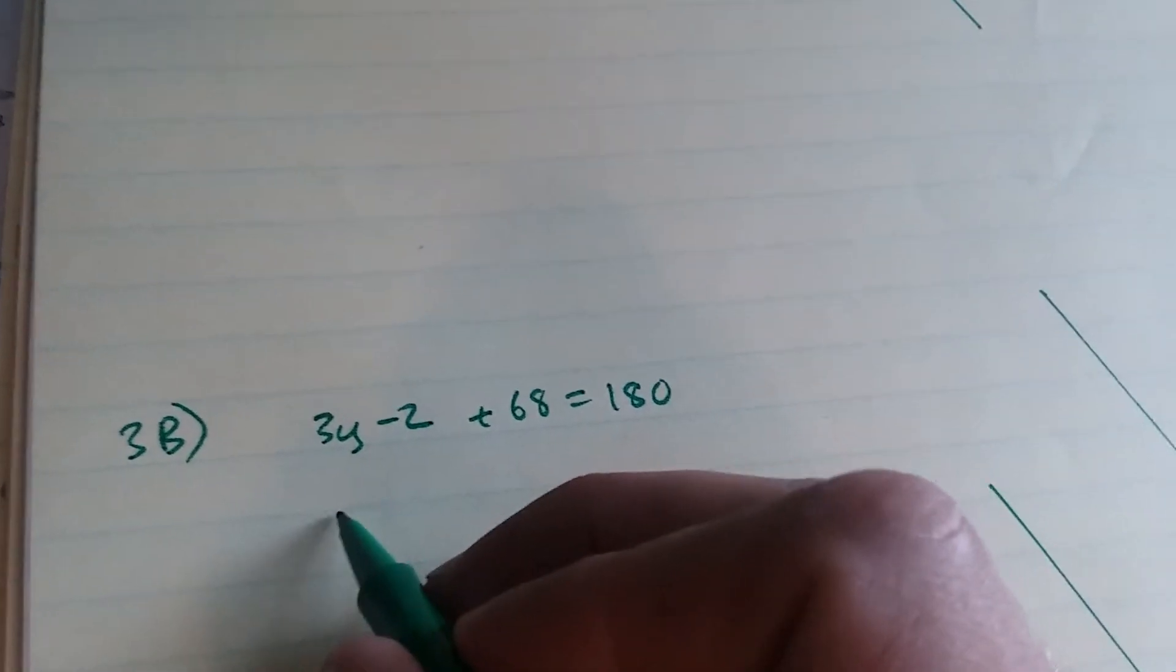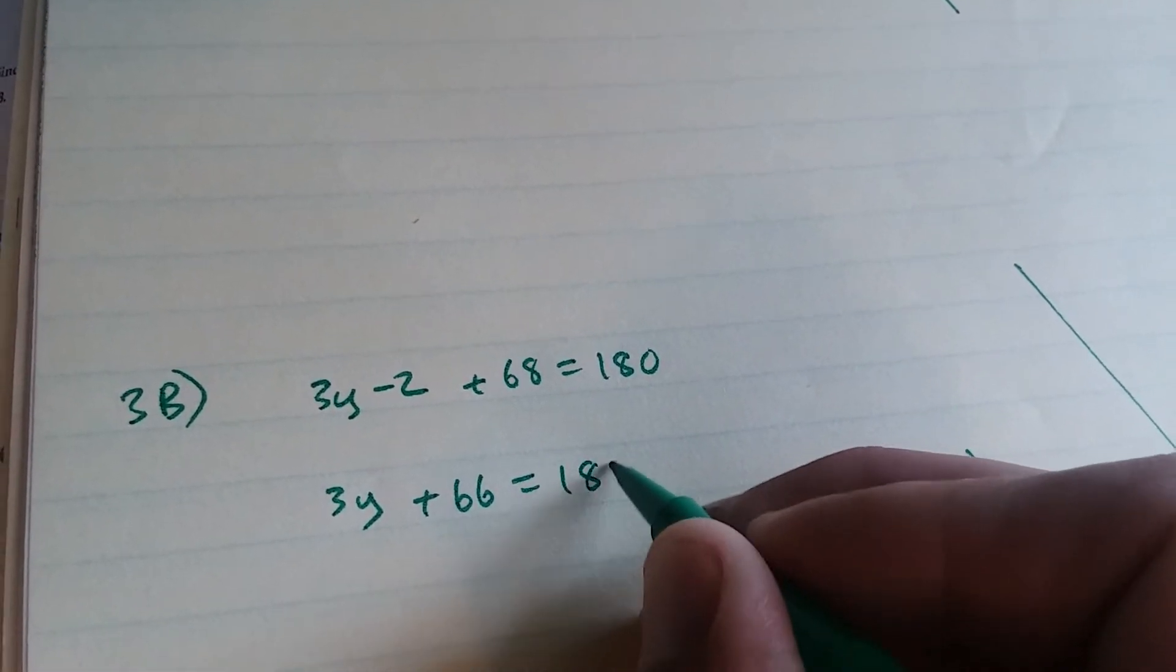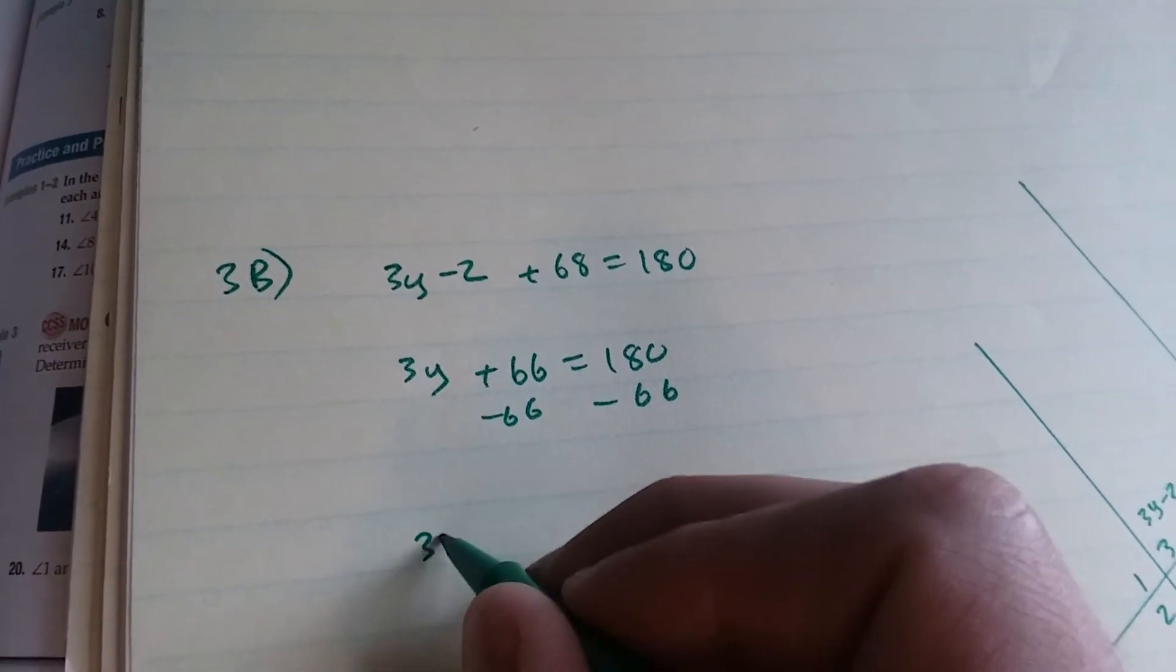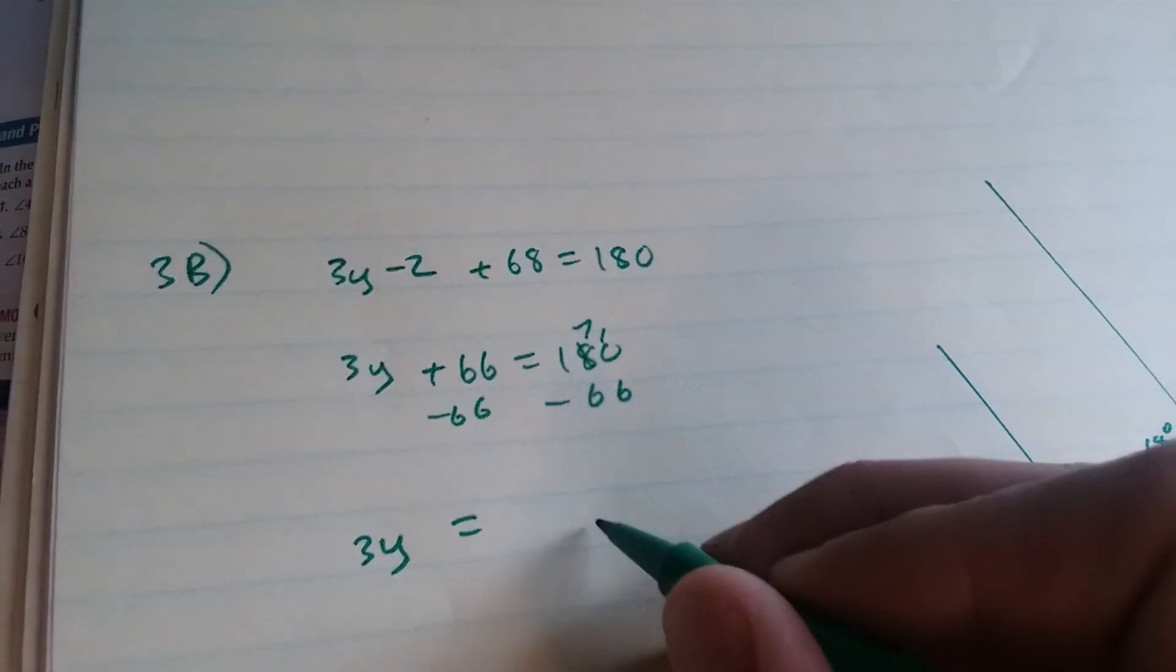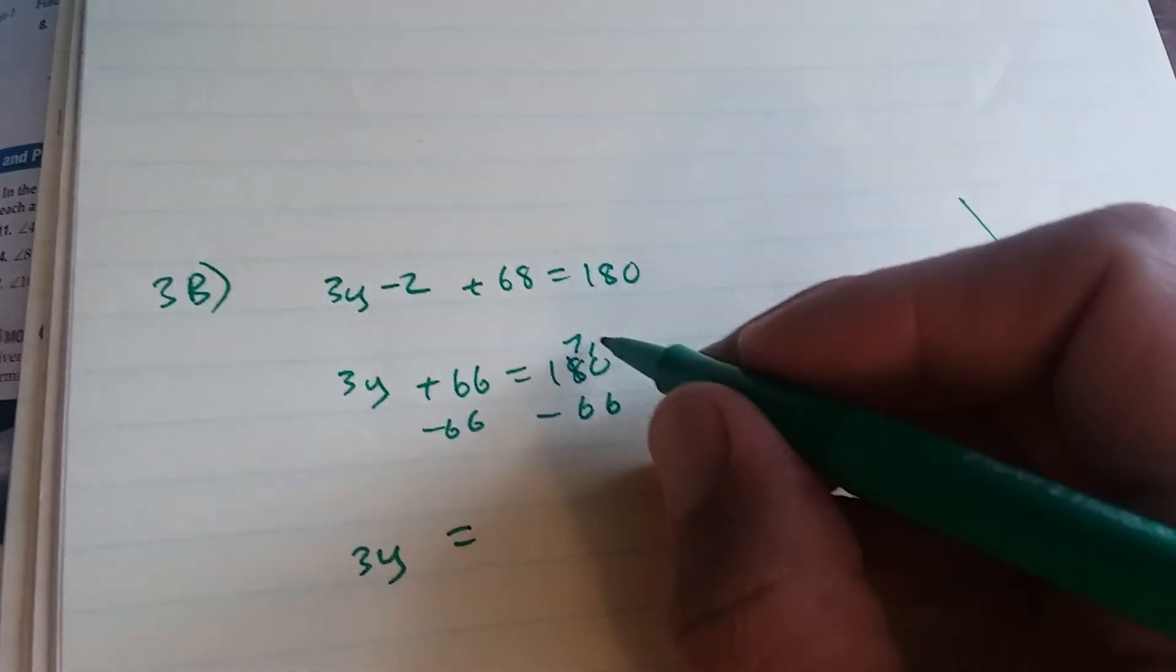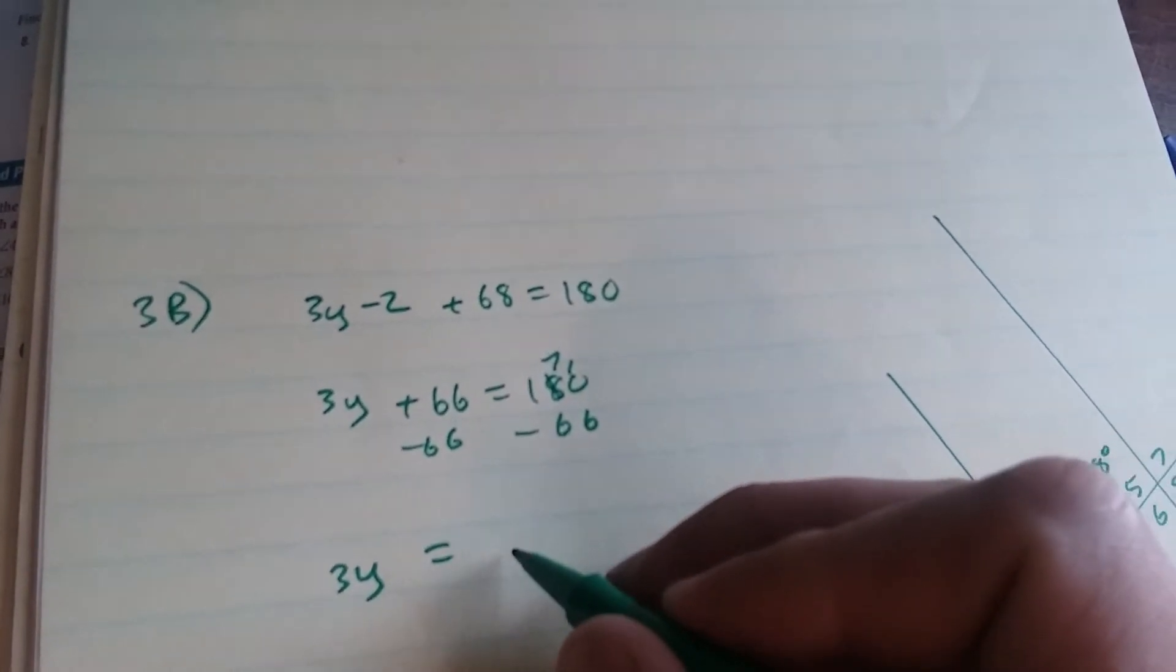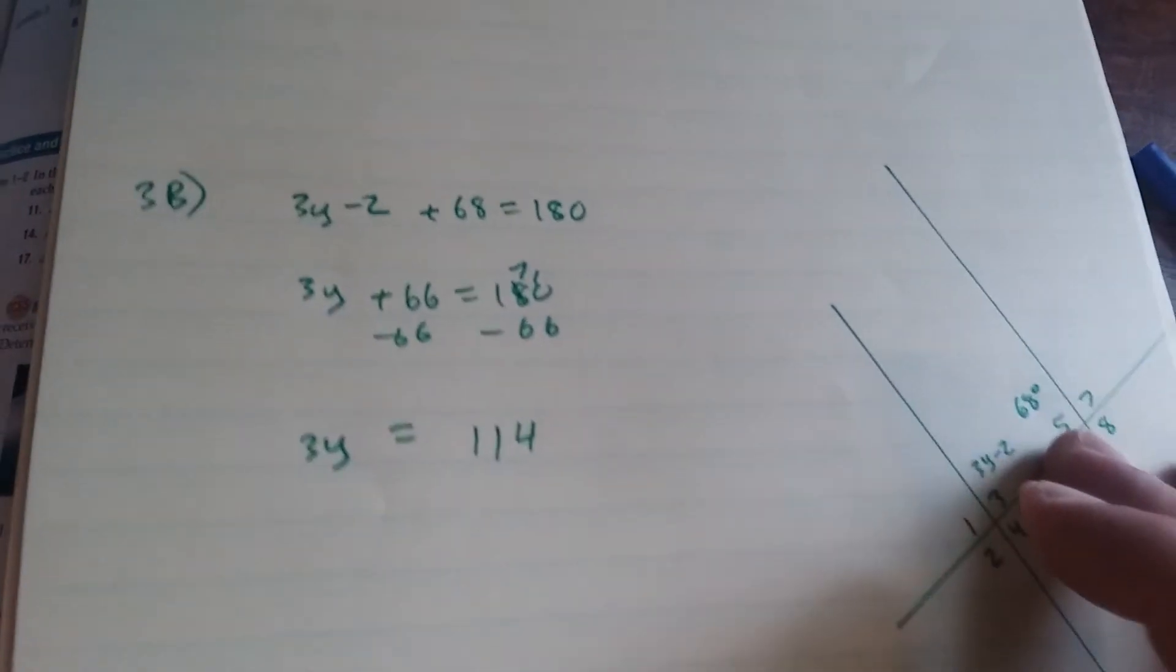So 3y plus 66 equals 180. Subtract 66 from both sides, 3y is equal to 114.